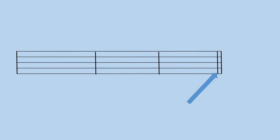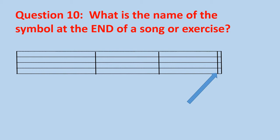Moving right along. Question ten: What is the name of the symbol at the end of a song or exercise? Think, think, think. Look where the arrow is pointing. Answer: the double bar line. Whoo, you guys are rocking it.